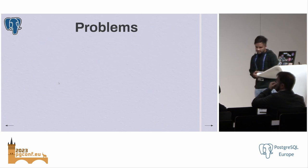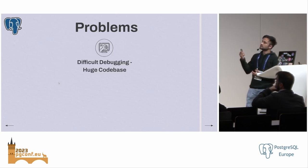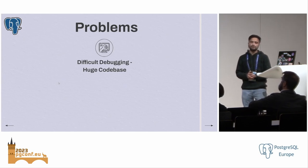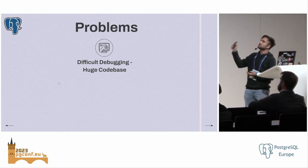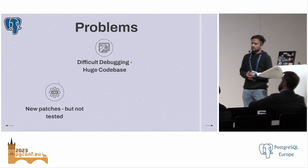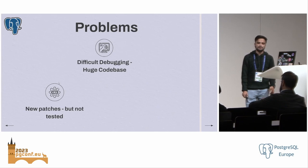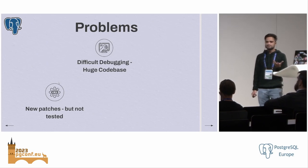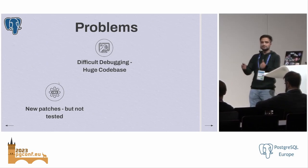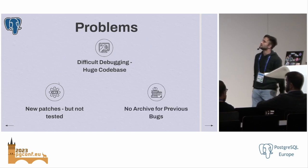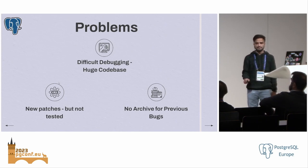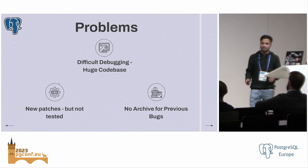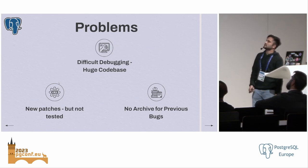Some problems we noticed in this codebase: first, it is really difficult to debug — the codebase is pretty huge and it's a nightmare. Second, there are new patches that come for the website but they are not usually tested centrally; contributors test them on local machines, but there should be some central place where everything is validated. And last but not least, we have no archives for any previous bugs for PGWeb — while developing this tool I had to dig through email archives to find bugs.